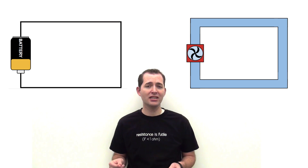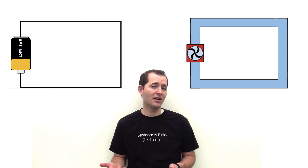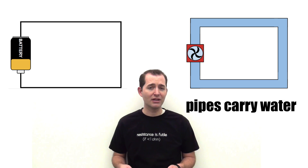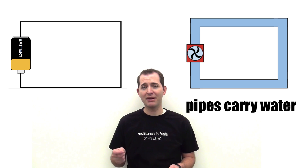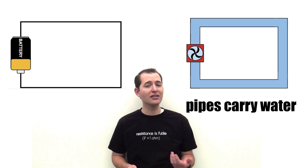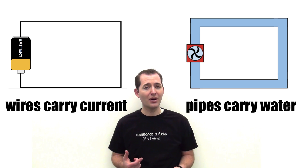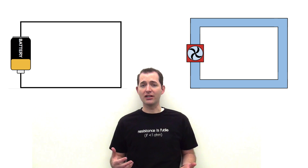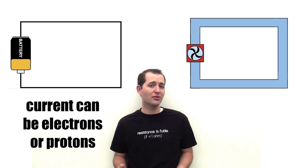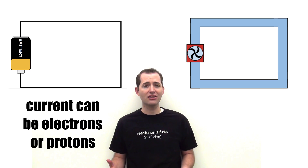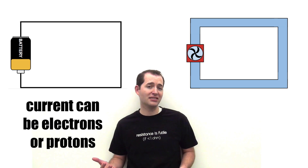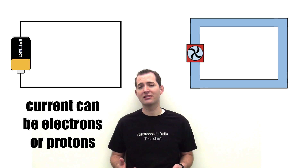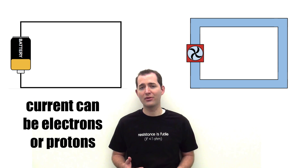Let's start by comparing these two systems. First, we have the water system, which uses pipes to pass the water through it. In our electrical circuit, the wires carry the electrical current. The electrical current flowing through the wires in the circuit is generally thought of as electrons, but in fact it can actually be electrons or protons that flow through the wires.